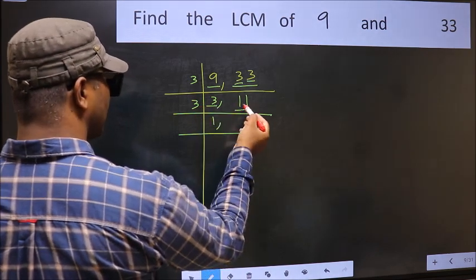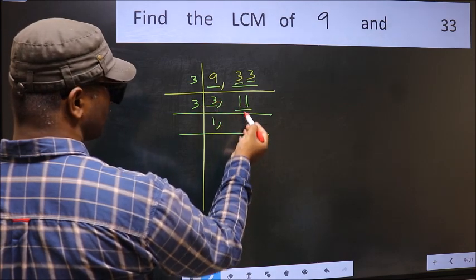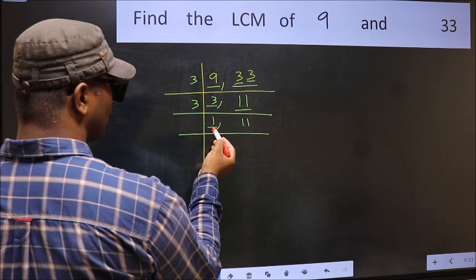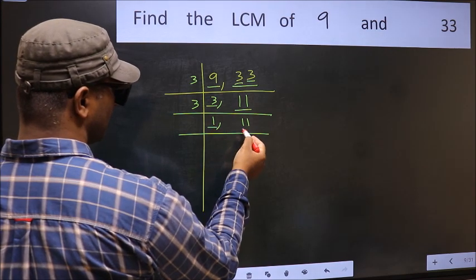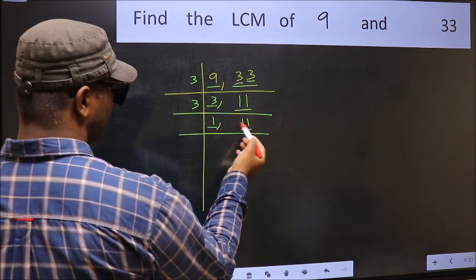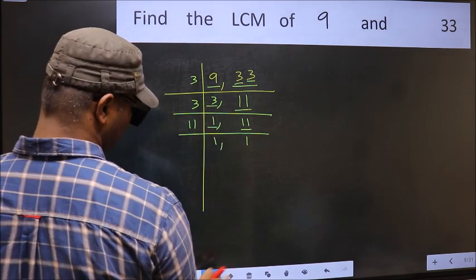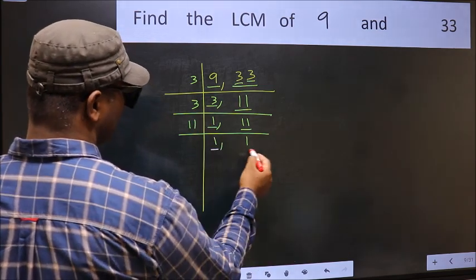The other number 11 is not divisible by 3. So you write it down as it is. Now we got 1 here. So focus on the next number 11. 11 is a prime number. So 11 once 11. So we got 1 in both the places.